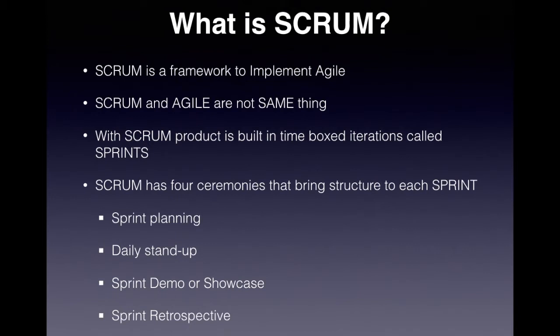The fourth ceremony is the sprint retrospective, which also happens at the end of each sprint. In this meeting, all team members talk together and figure out what went well, what didn't go well, and what they need to do to improve in the next sprint. Usually everyone has sticky notes where they can write their views, or a person writes down what exactly went well, what didn't go well, what improvements need to be made, and if there are any confusions or doubts that need to be cleared. These are the four key ceremonies of Scrum.